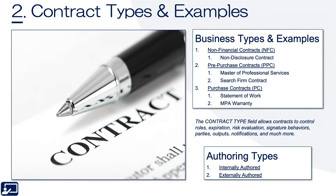The contract type is actually a specific field within Fusion. That field allows contracts to control roles that are involved, expiration, risk evaluation, signature or e-signature behaviors, who the parties are or may be, what the output is — whether that contract outputs an agreement with lines, a regular agreement, et cetera — notifications, and much more.